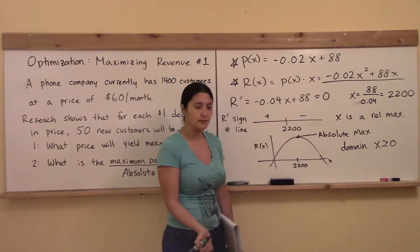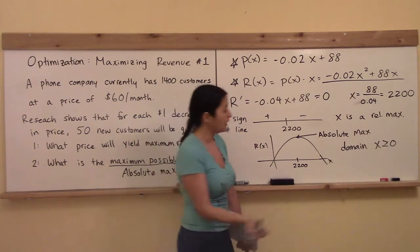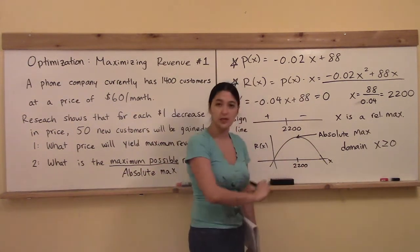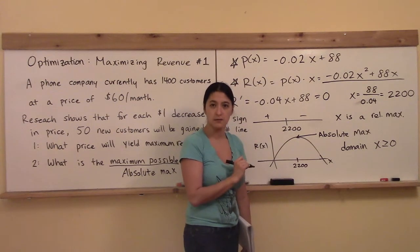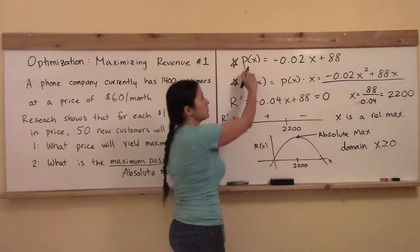Do you know how to answer that? Well, I know that x equals 2,200 customers is the location of the maximum revenue,